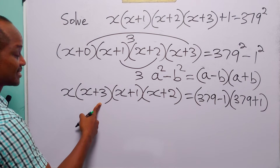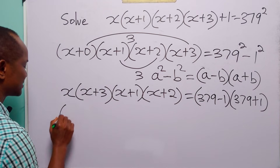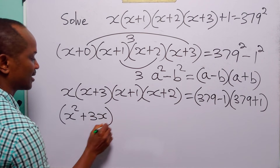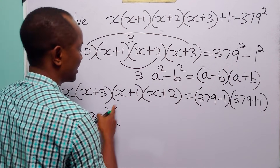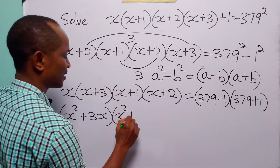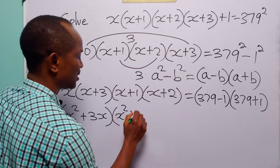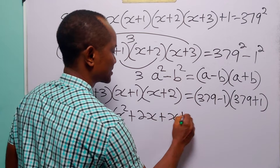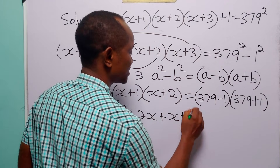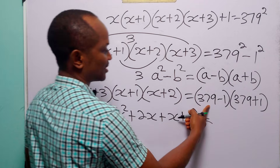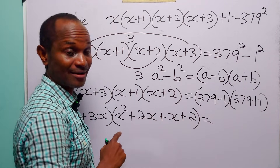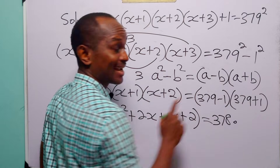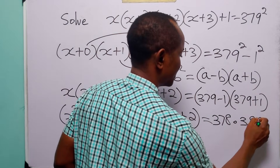Now let us open these brackets two at a time. x times x is x squared plus 3x. Then x times x is x squared, plus x times 2 which is 2x, plus 1 times x which is x, plus 1 times 2 which is 2. And this is equal to 378 multiplied by 380.